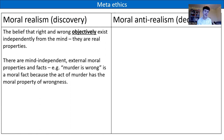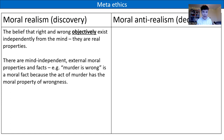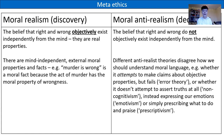Moral realism is the belief that right and wrong objectively exist independently from the mind — they are real properties, mind-independent external moral properties and facts. For example, 'murder is wrong' is a moral fact because the act of murder has the moral property of wrongness. It's the idea that 'murder is wrong' is not an opinion but a moral truth for us to discover — it independently and objectively exists. With moral realism, it's all about morality being objective and being discovered by us. Our examples are naturalism and intuitionism.